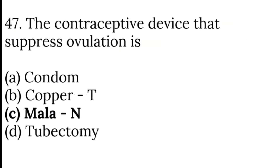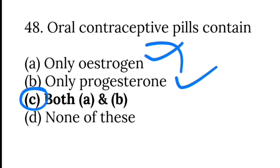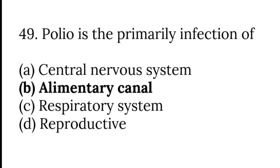The contraceptive device that suppresses ovulation is Mala N. Oral contraceptive pills contain both estrogen and progesterone. Polio is primarily an infection of the alimentary canal.